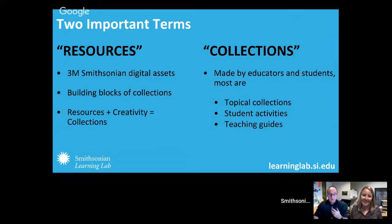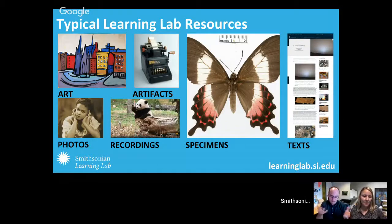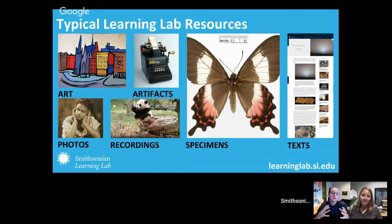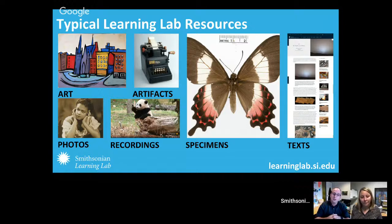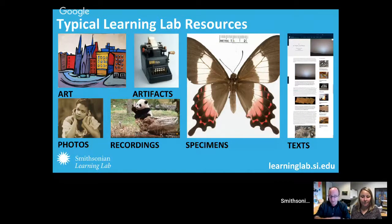The resources include art, photographs, artifacts, recordings, specimens, and text. The Smithsonian is a big place, so what you'll find crosses disciplines from history, art, science, and culture. It's a huge resource bank of trusted content. It's a completely free platform — we do ask that you create an account if you want to start building collections, but you can access everything we're showing tonight without an account.